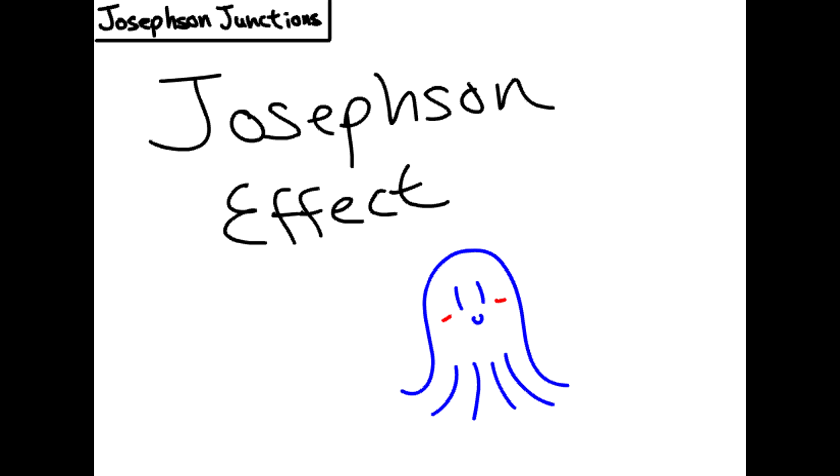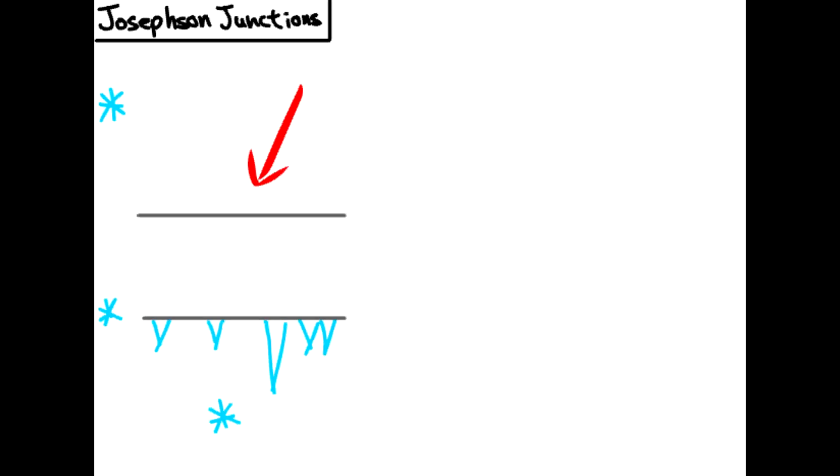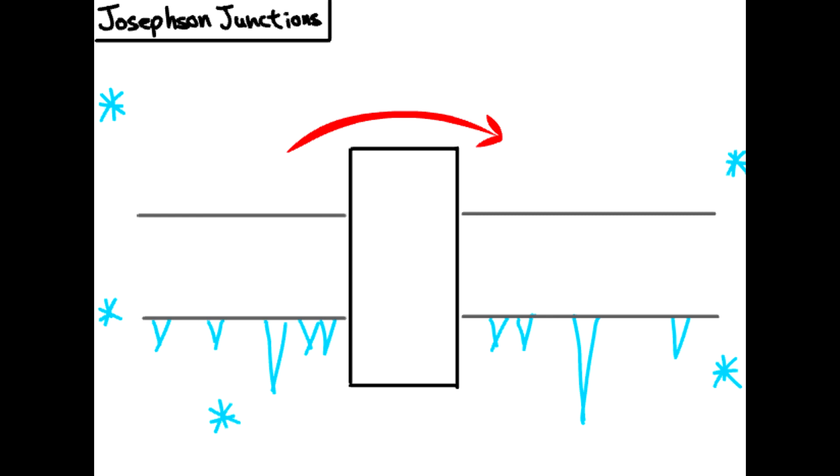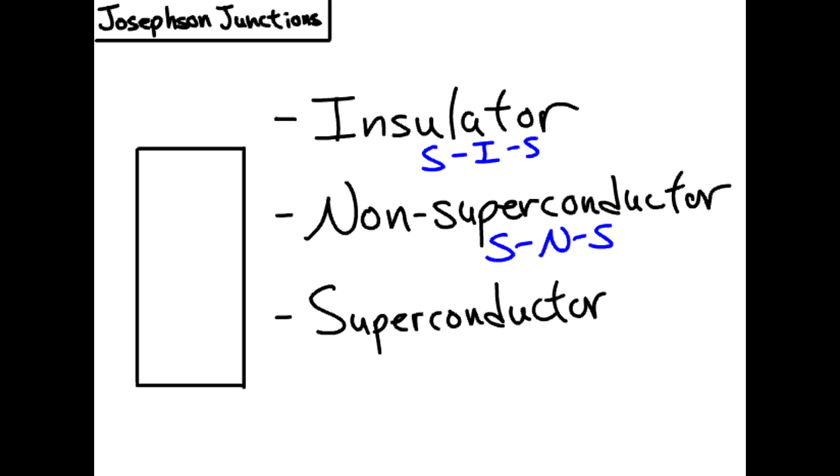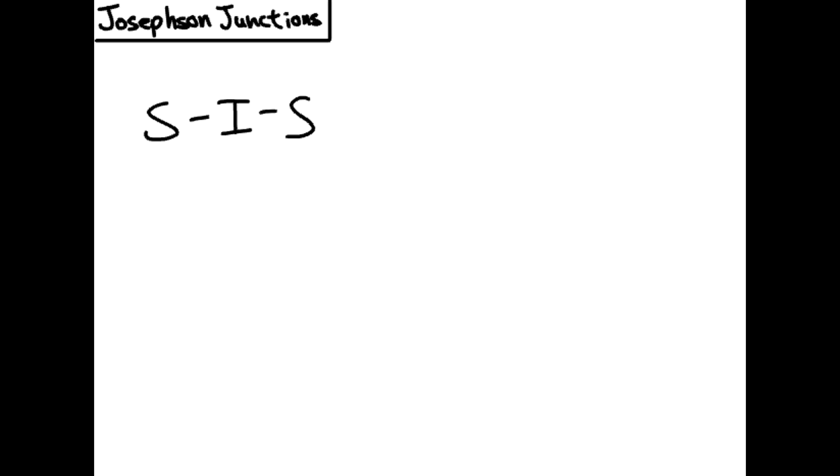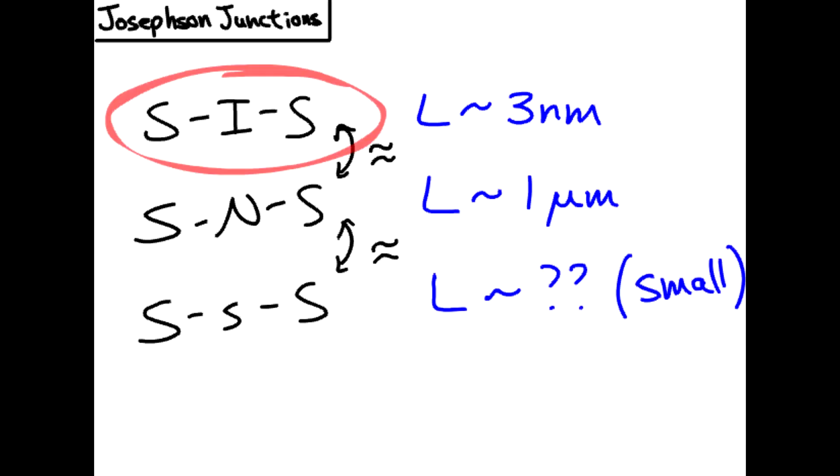Now to the fun part. The Josephson effect is what happens when you have supercurrent flowing from one superconductor to another through a weak link. This link could be an insulator, a section of non-superconducting metal, or just the kink in the superconductor that causes the superconductivity to weaken a little bit. These three types of Josephson junctions mostly differ on how thick the barrier is, but let's focus on the insulator version to get an intuition.